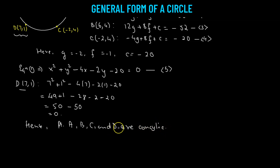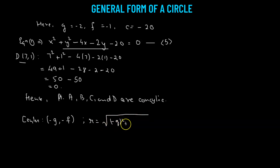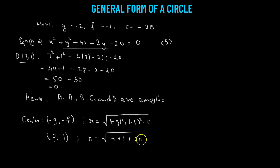Now, using equation 5, we find the center and radius. For the general circle equation, the center is given by (negative g, negative f). Since g is negative 2, negative g equals positive 2. Since f is negative 1, negative f equals positive 1. So the center is (2, 1). The radius r equals the square root of g squared plus f squared minus c, which is the square root of 4 plus 1 plus 20, giving r equals 5. So the radius of the circle is 5 units, centered at (2, 1).